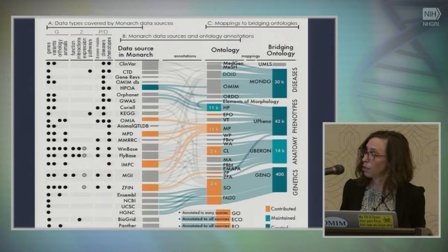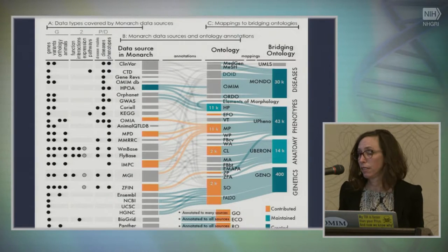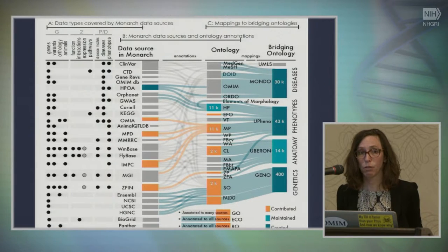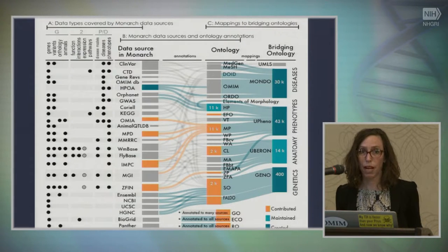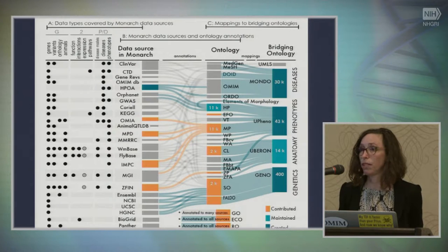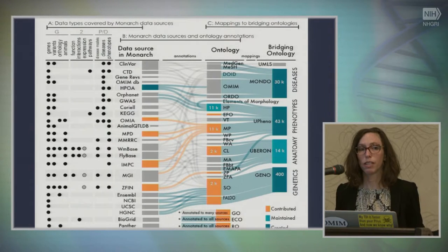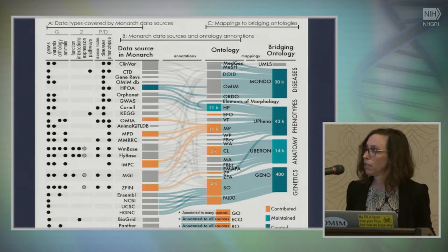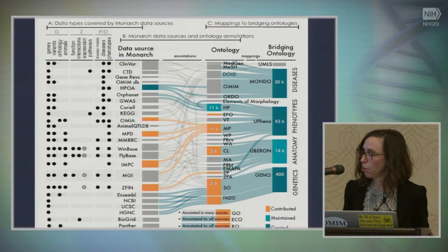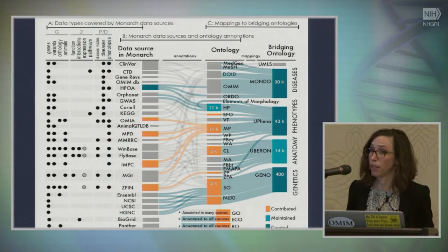We've also done the same thing for genotype. One of the biggest struggles in integrating these data is that every source associates phenotypes with different aspects of the genotype — one source will say a phenotype is related to an allele, another to a haplotype, another will give you a SNP, and another a full genotype. We have a small uber-genotype ontology that allows us to propagate phenotypes properly across these different representations.